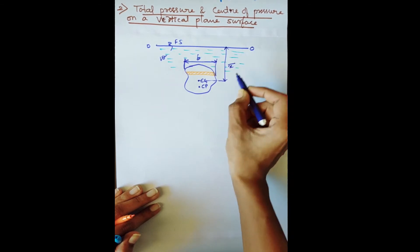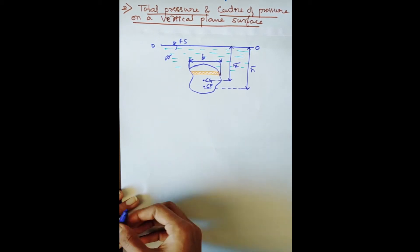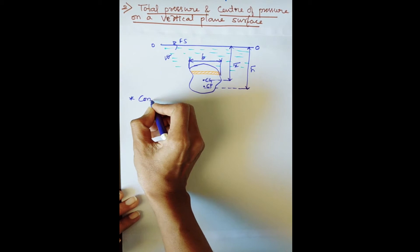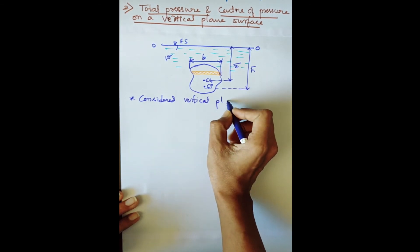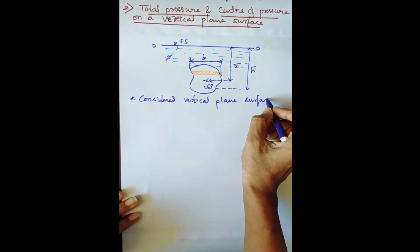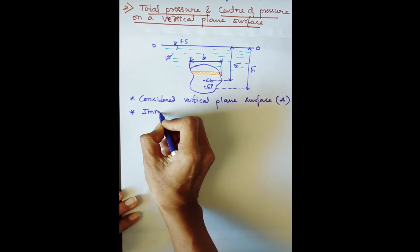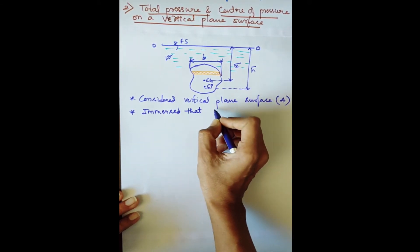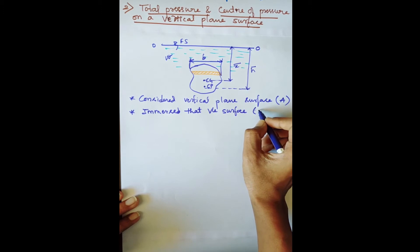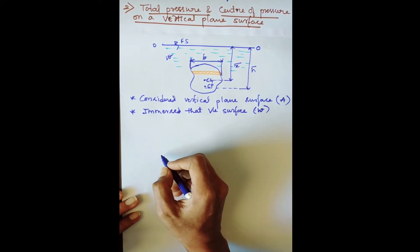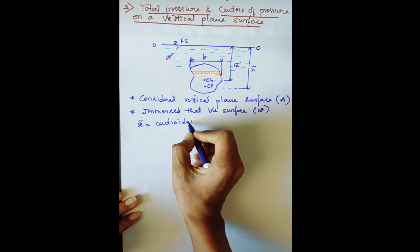The depth of the center of gravity is denoted by the symbol x-bar. We have considered a vertical plane surface of area A, immersed in a static mass of liquid of specific weight w. Here x-bar represents the centroid of the vertical plane surface.